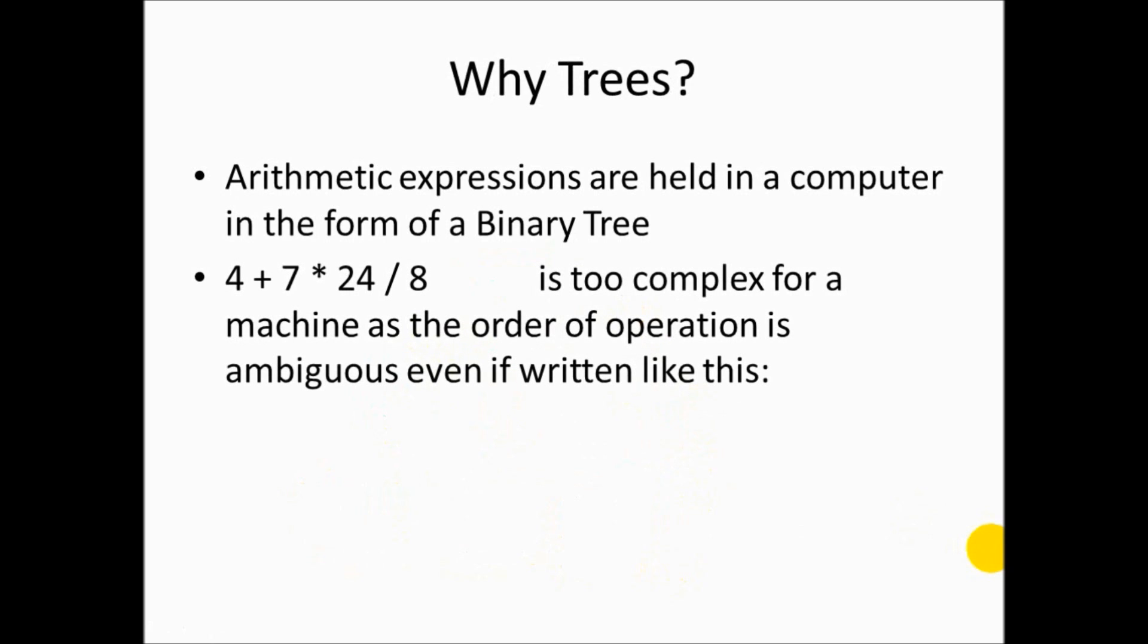So 4 plus 7 times 24 divided by 8 is too complex, or ambiguous is the correct word, for a machine, as the order of operation is ambiguous even if written like this in brackets. It still is not helpful. We could get a high-level language to understand that, but the machine code can't understand that. So compilers use a binary tree to store data, and to retrieve data.